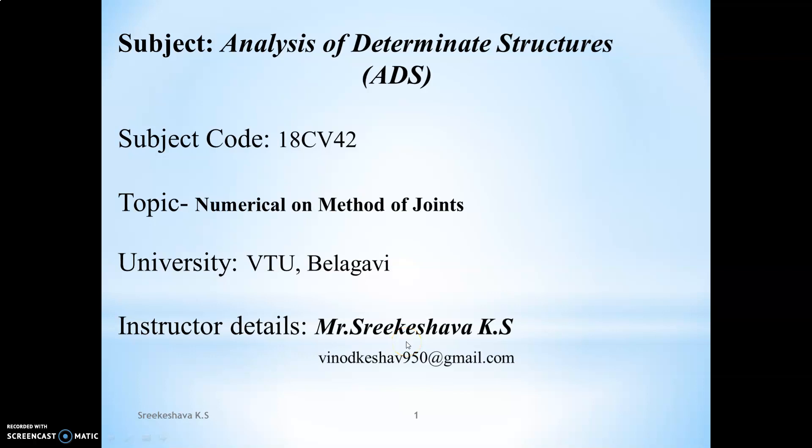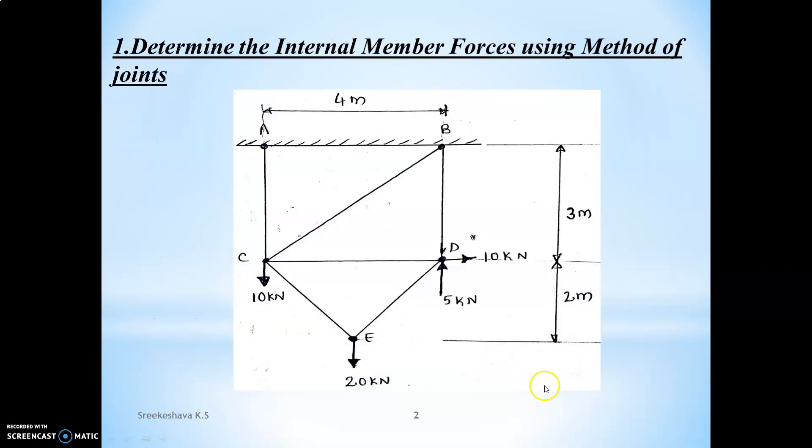Hello, good morning. In this particular section, we are going to discuss numericals related to method of joints. So first consider this particular problem. Which kind of problem is this? Because this is a hanging truss or cantilever truss. In this kind of trusses, we are not required to determine the reactions. So what are the basic steps involved to evaluate the internal member forces using method of joints? I will explain the general steps now.